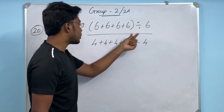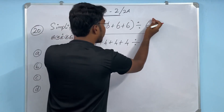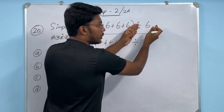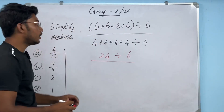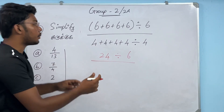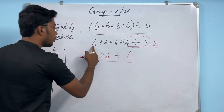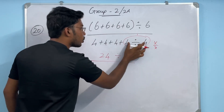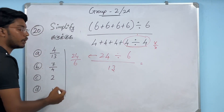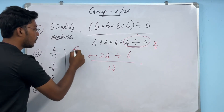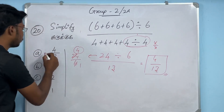Question: (6+6+6+6/6) ÷ (4+4+4+4/4). Use BODMAS. In the numerator, 4×6 = 24. In the denominator, apply BODMAS — divide first: 4/4 = 1, then 4+4+4+1 = 13. So we get 24/6 ÷ 13. Wait — numerator: 6 divided by 6 = 1, so 6+6+6+1 = ... actually 24/6 = 4. Then 4/13 is the final answer.